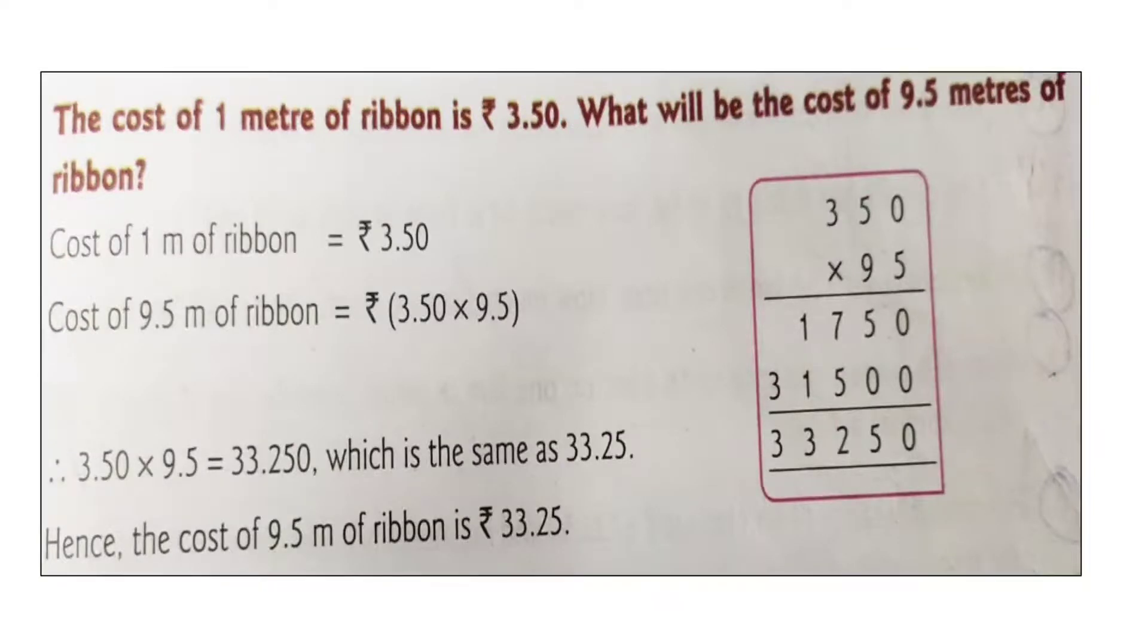Look at another word problem. The cost of one meter of ribbon is rupees 3.50. What will be the cost of 9.5 meters of ribbon? Cost of one meter of ribbon is given and you have to find out cost of 9.5 meters of ribbon. You know very well, to find more value, we will multiply.